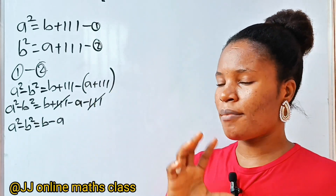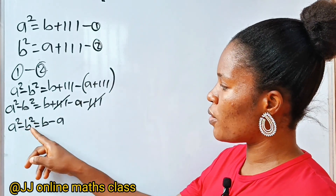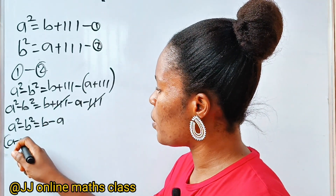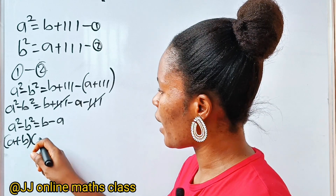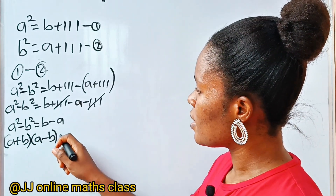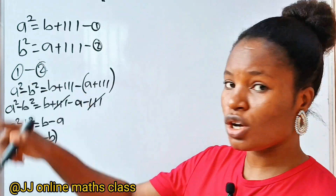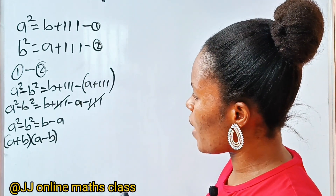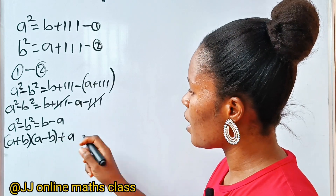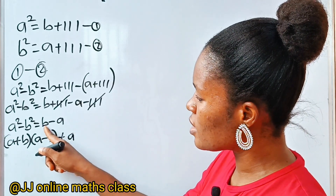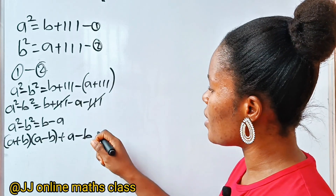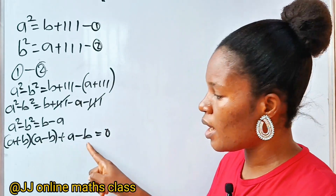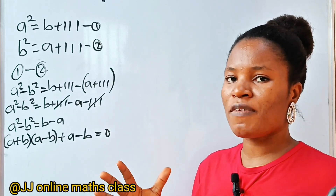Recall the algebra identity that A squared minus B squared — difference of two squares — is the same thing as (A plus B)(A minus B). Now let's bring these two to the other side of the equation and equate to zero. So minus A becomes plus A, and plus B becomes minus B, all equal to 0. Notice that we have A minus B appearing twice, so let's factor that out.